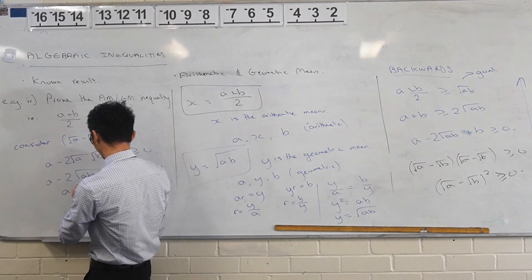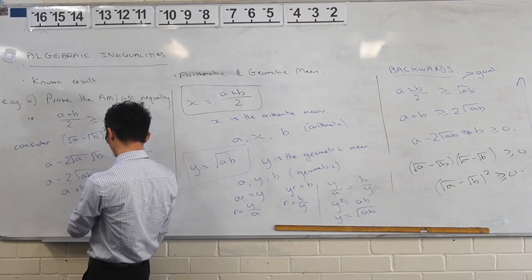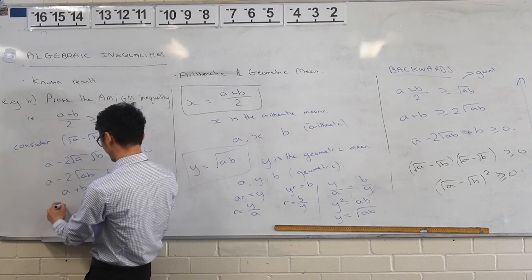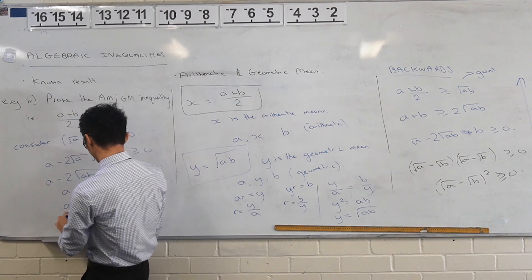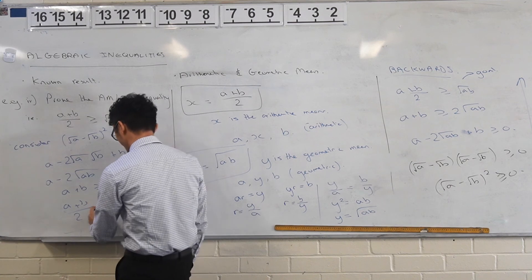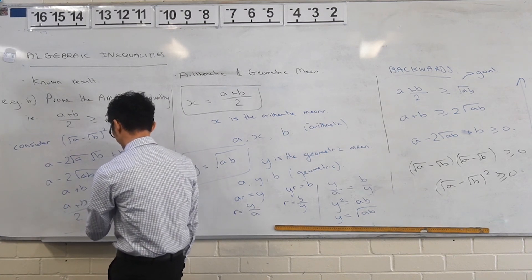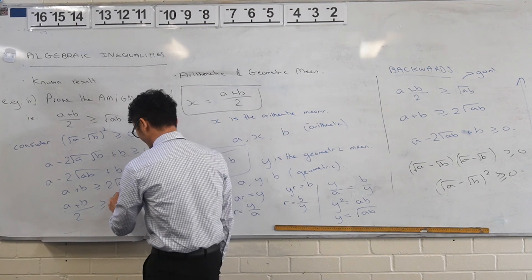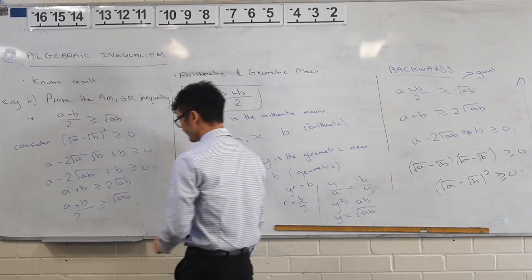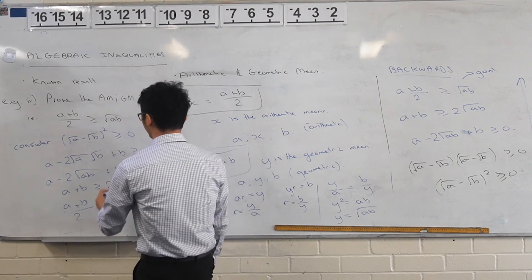So we've got a plus b is greater than or equal to 2 root ab, and so then we have a plus b over 2 divided by 2, we'll get (a plus b)/2 is greater than or equal to the square root of ab. Therefore this is true.